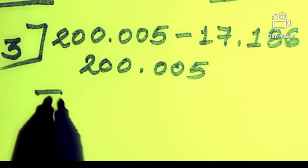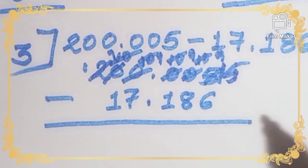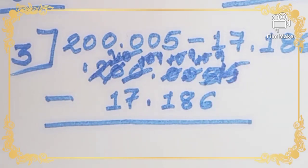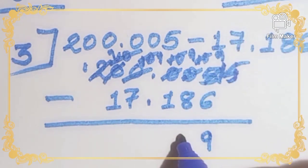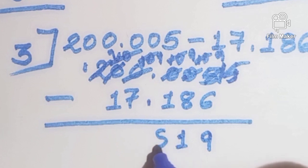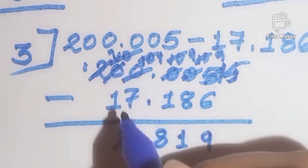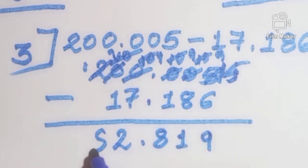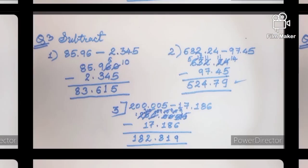Next question: 200.005 minus 17.186. We need to borrow from all the numbers. 5 becomes 15 — 15 minus 6 is 9. 10 becomes 9, so 9 minus 8 is 1. Then 9 minus 1 is 8. Point as it is. 9 minus 7 is 2. 9 minus 1 is 8. 1 stays as it is. So the answer is 182.819.